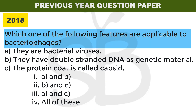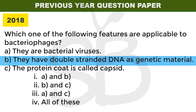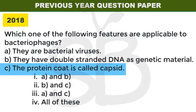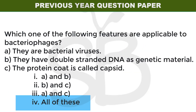2018 improvement exam: which of the following features are applicable to bacteriophages? Bacteriophages are viruses that infect bacteria. They have a protein coat called a capsid, made of units called capsomeres. The answer is all of the above — options A, B, and C are all correct. This diagram is important to study from the textbook.